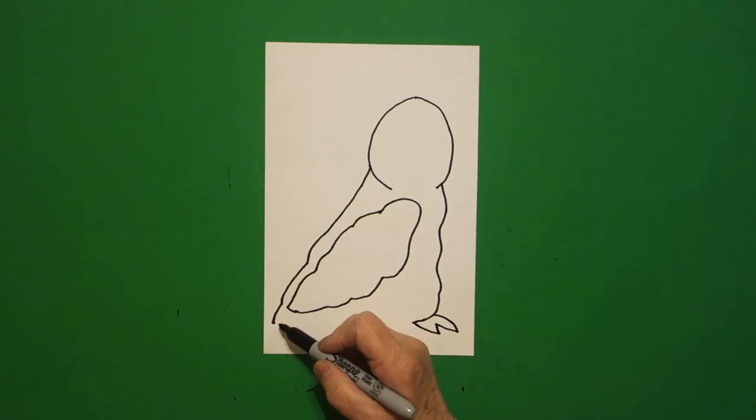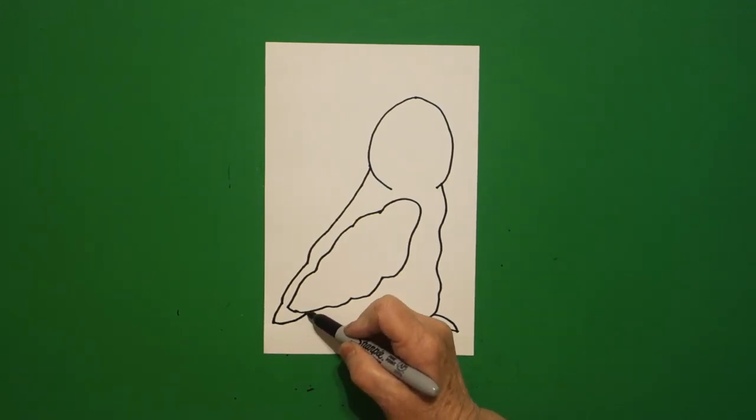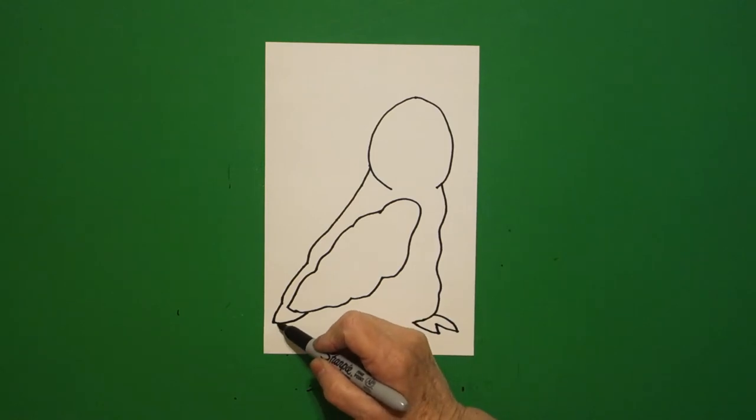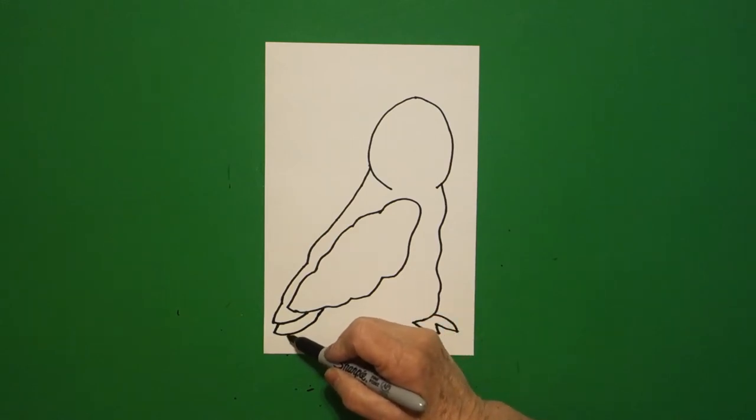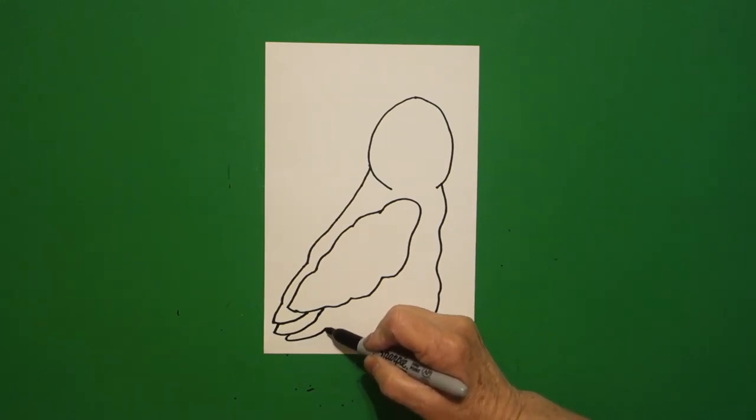We're going to come over here on the left-hand side and we're going to draw a curved line up, connect. Come back down, curved line out, up, connect. Curve line out, up, connect.